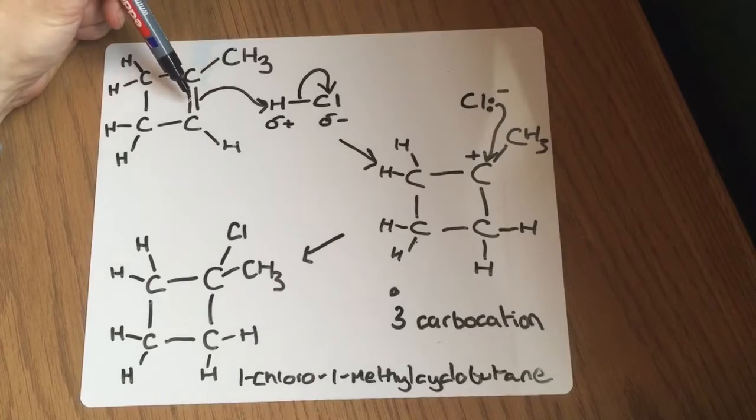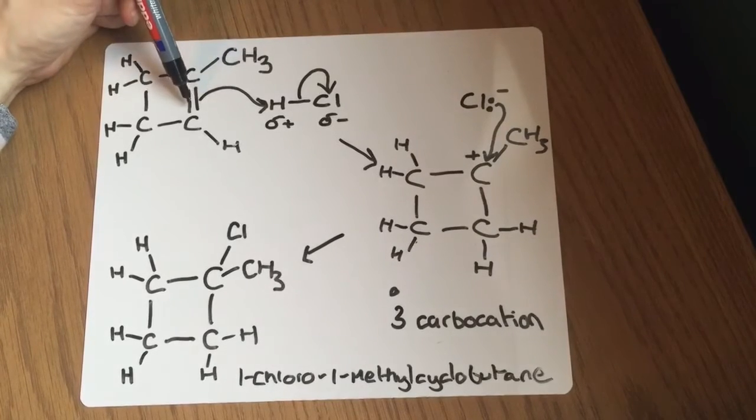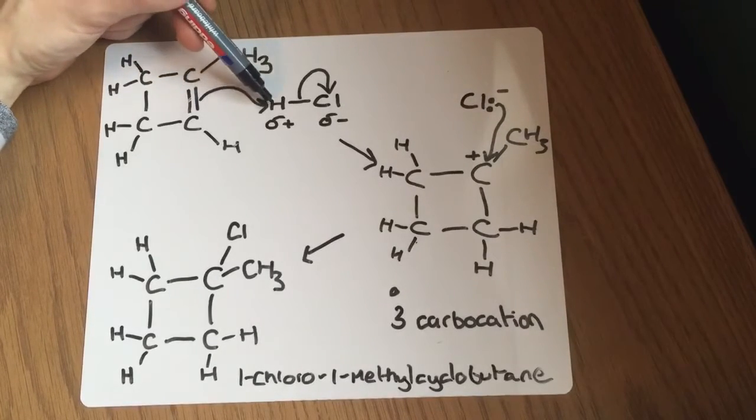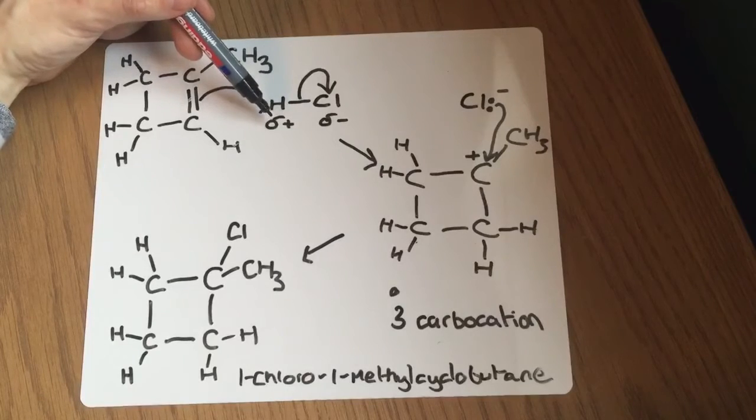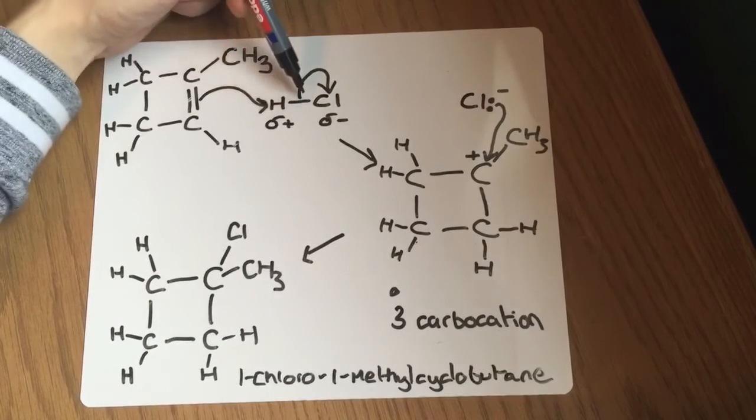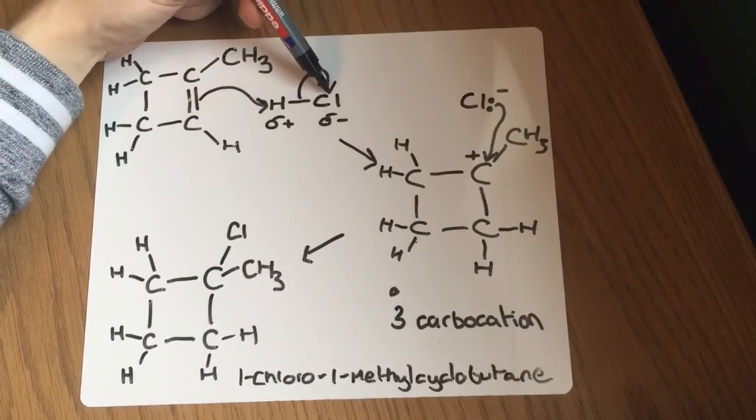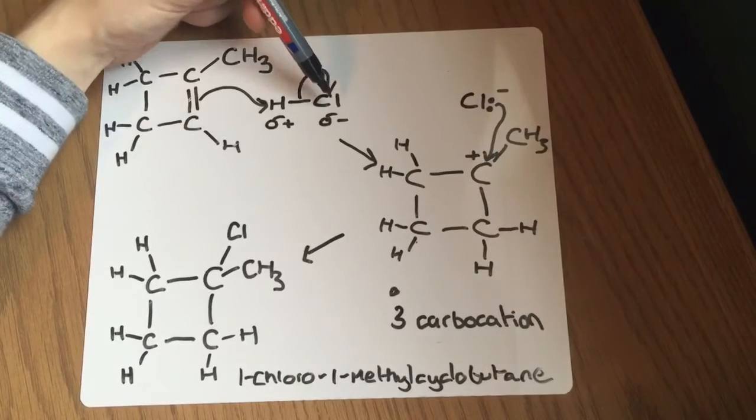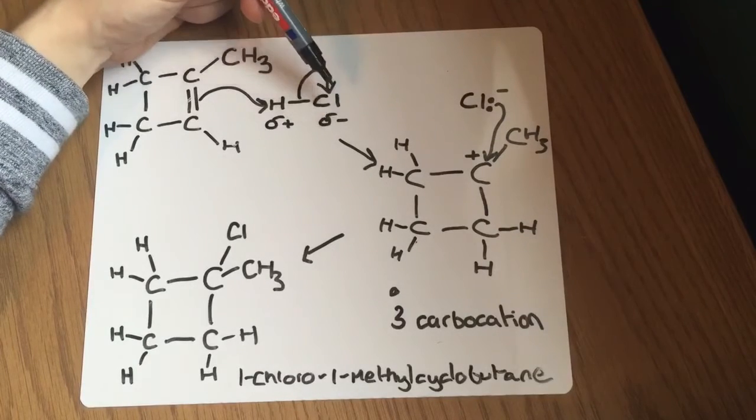Now starting off the mechanism, always the same way. You always show the double bond reaching out here to this hydrogen which is delta plus. This double bond is an area of high electron density, and so it attacks the electrophile just here, and this bond then breaks, so this pair of electrons then moves onto the chlorine with the delta minus charge.